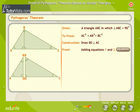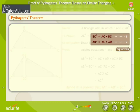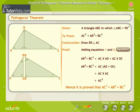Adding equations 1 and 2, we get AB squared plus BC squared equals AC into AD plus AC into DC. That is equal to AC into (AD plus DC). That is equal to AC into AC. That is equal to AC squared. Hence, it is proved that AC squared is equal to AB squared plus BC squared.